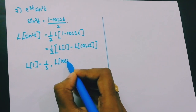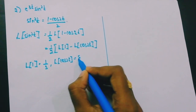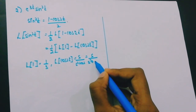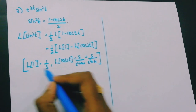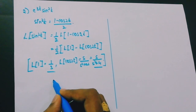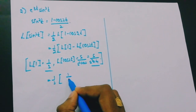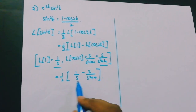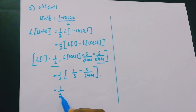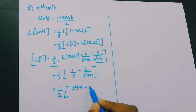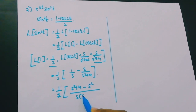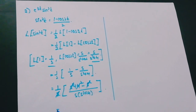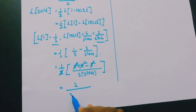L{1} = 1/s. For L{cos(2t)}, the formula is s/(s²+a²) with a=2, giving s/(s²+4). So L{sin²(t)} = (1/2)[1/s − s/(s²+4)]. After cross multiplication: (1/2)·[(s²+4 − s²) / (s·(s²+4))] = (1/2)·[4/(s·(s²+4))] = 2/(s·(s²+4)).